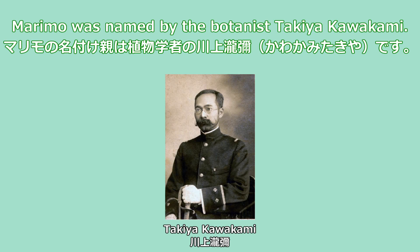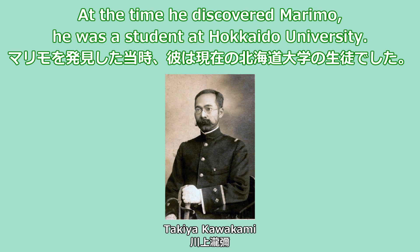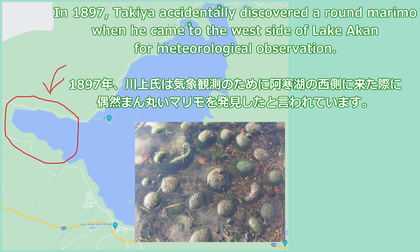Marimo was named by the botanist Takeya Kawakami. At the time he discovered marimo, he was a student at Hokkaido University. In 1897, Takeya accidentally discovered a round marimo when he came to the west side of Lake Akan for meteorological observation.